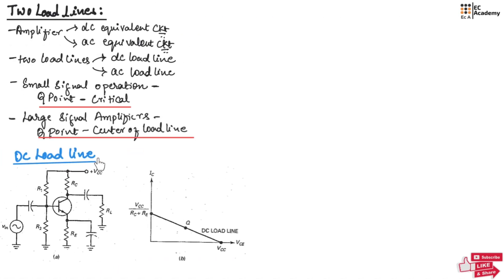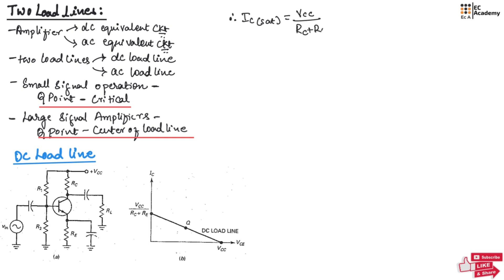Now let us understand the DC load line. Figure A shows the voltage divider bias amplifier, and Figure B shows the DC load line with the Q point at the center of the DC load line. This Q point can be moved along the DC load line by varying the value of resistor R2. If we have a very large value of R2, it will make the transistor operate in the saturation region. Therefore, IC saturation = VCC / (RC + RE), which is obtained when R2 is very large.